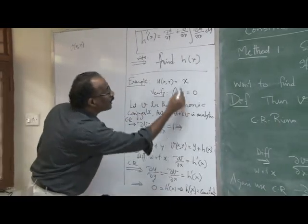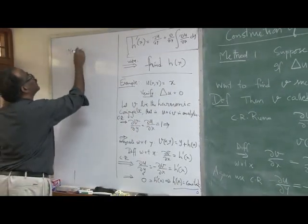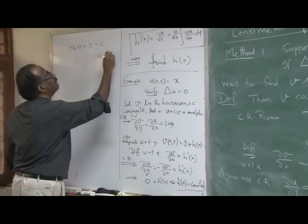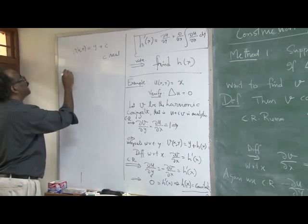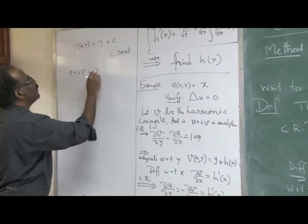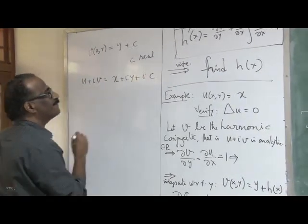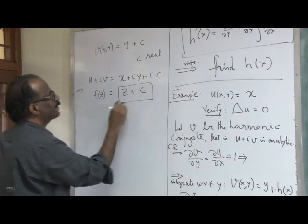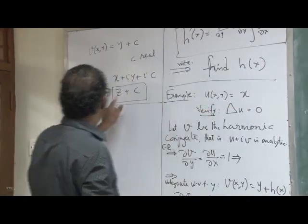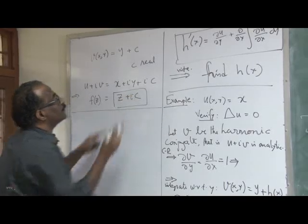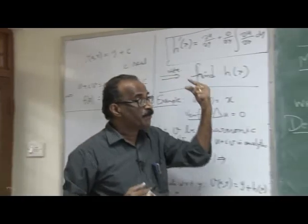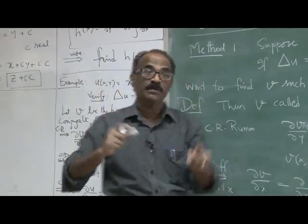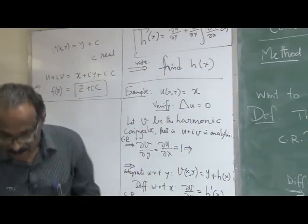When you substitute, the constant c becomes purely imaginary when combined with i. So f(z) = u + iv = x + iy + ic = z + ic. Thus f(z) = z + c, where c is real. The analytic function is unique up to a constant — different constants give different analytic functions.